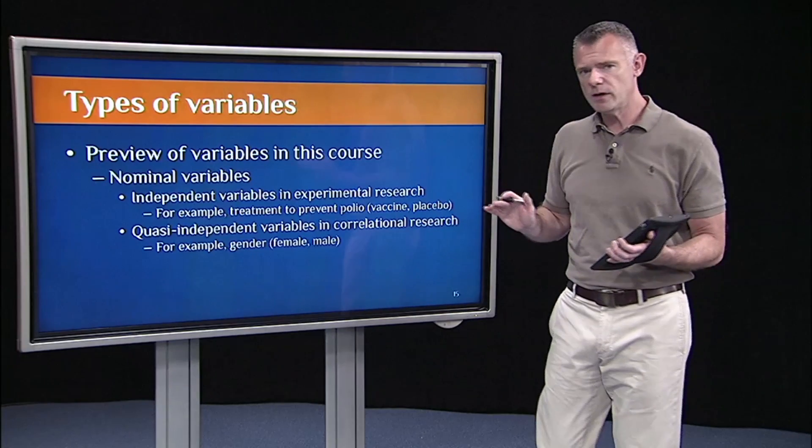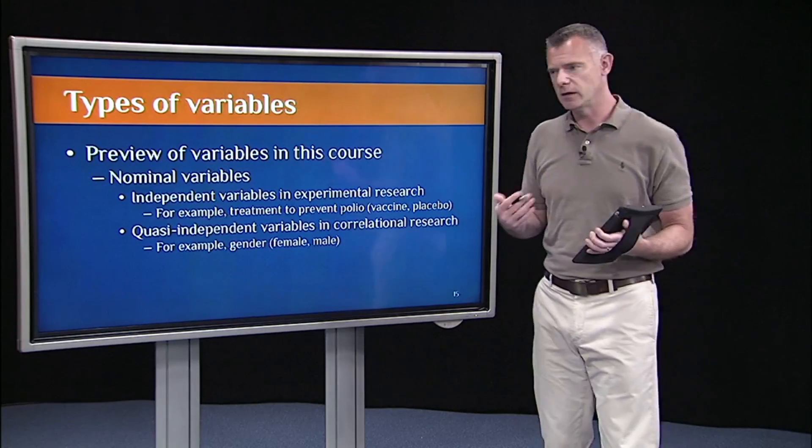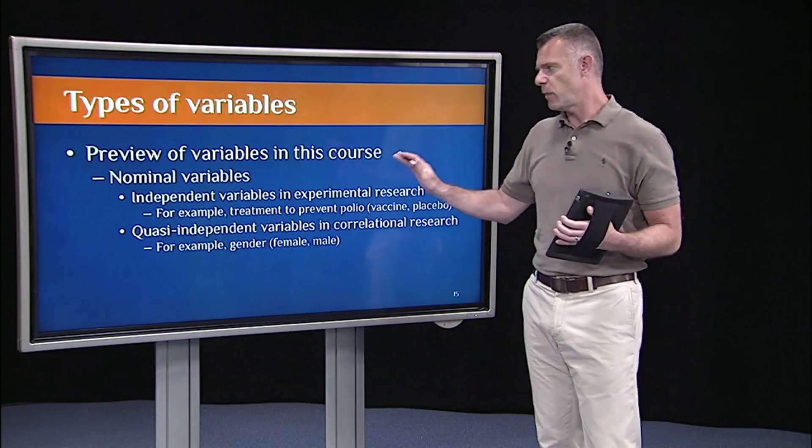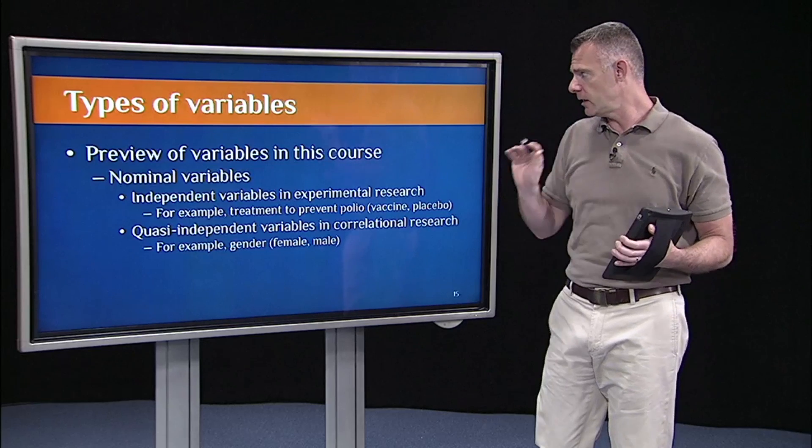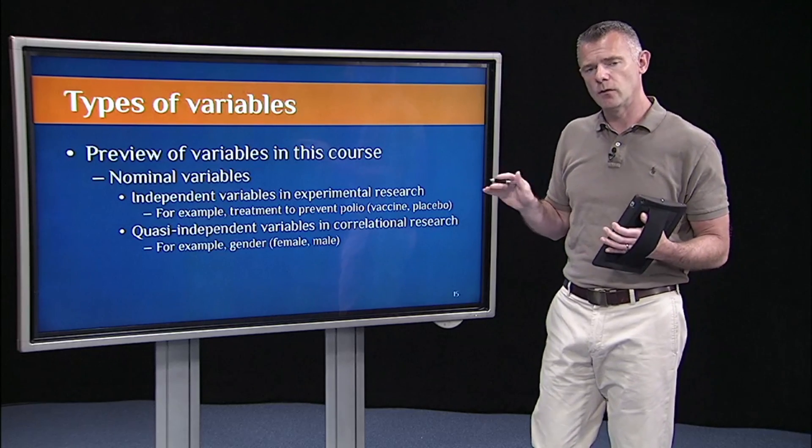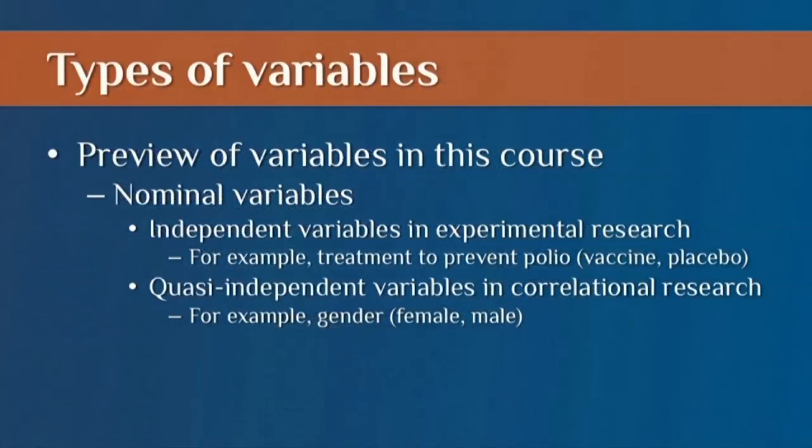So just to quickly preview the variables that we're going to use in this course, in experimental research I talked about independent variables. For example, in the polio vaccine trials, the independent variable was the treatment, whether the child received the vaccine or the placebo.